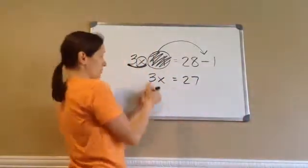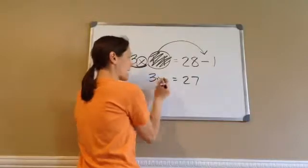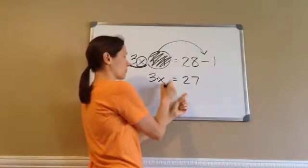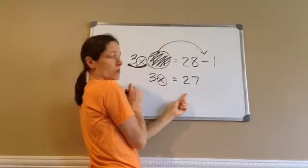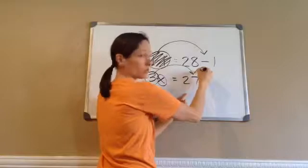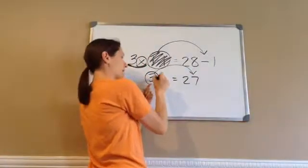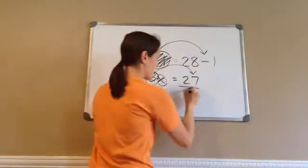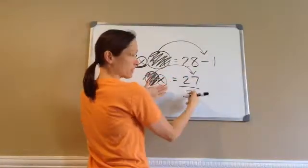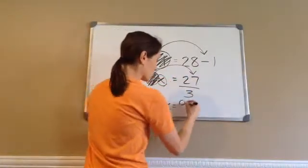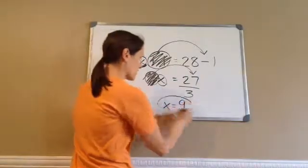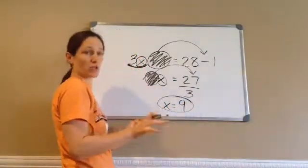Now we have 3x equals 28 minus 1, which is 27. The problem says 3 times what equals 27. Ultimately, we're trying to get this by itself. So, this times 3, we're going to move across the equals. What's the opposite of times 3? Divide it by 3. So, now x equals 27 divided by 3, and x equals 9. So, we ultimately solved for x. That's what you're trying to do.